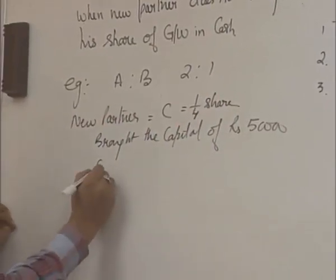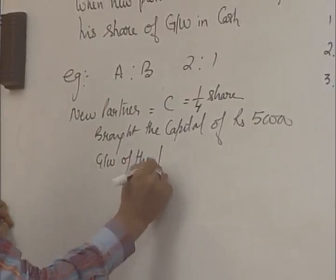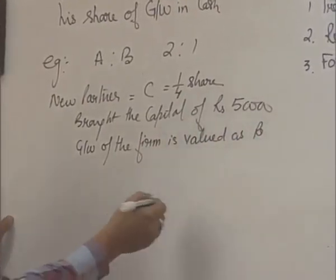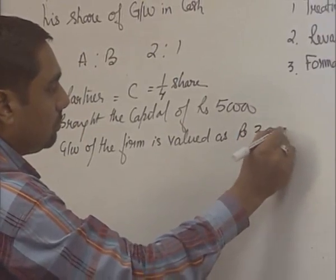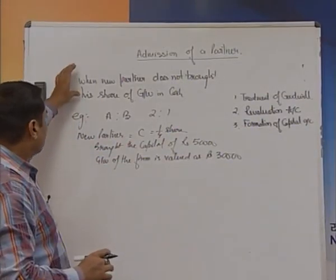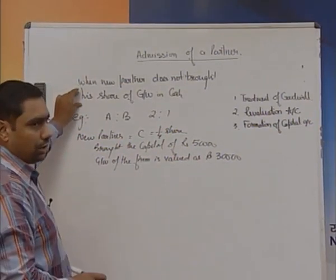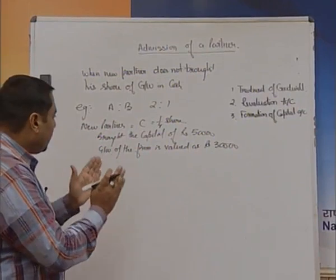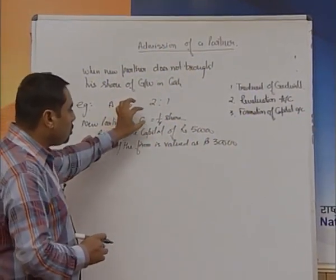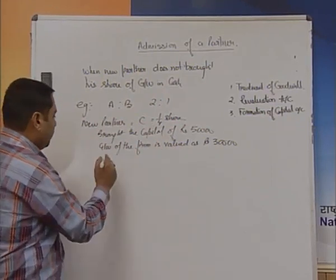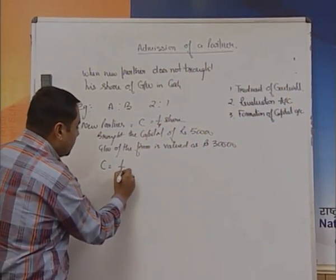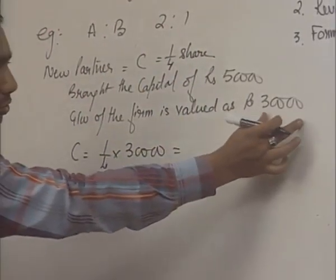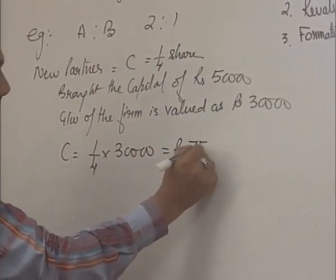On the admission of C, the goodwill of the firm is valued at rupees 30,000. Our condition is: when the new partner does not bring his share of goodwill in cash, what entries are we going to pass? First of all, calculate what C's share in goodwill is, because 30,000 is the goodwill of the whole firm. C is joining for a one-fourth share, so one-fourth of 30,000 comes out to be rupees 7,500.